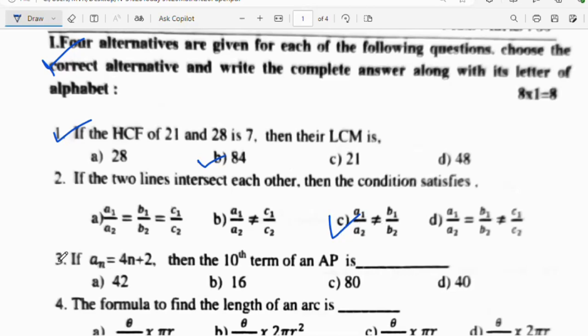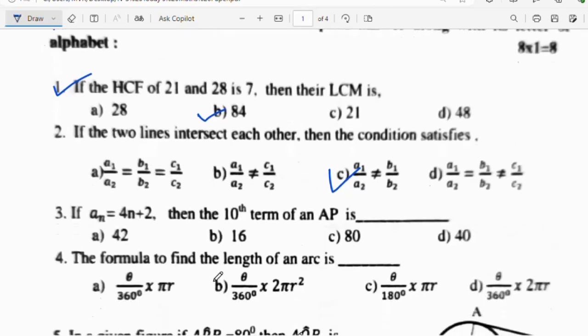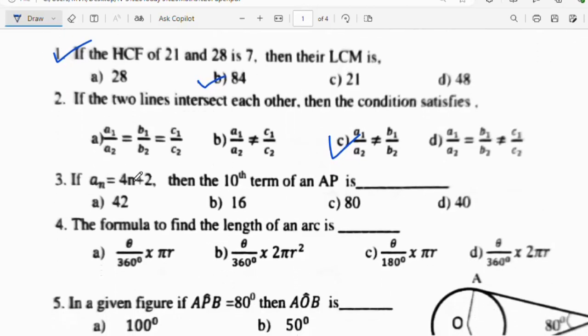Third question: If a_n is equal to 4n plus 2, then the 10th term of an AP is. In the place of n, you substitute 10. So 4 times 10 is 40, 40 plus 2 is 42. The answer is 42, option A is the right answer.